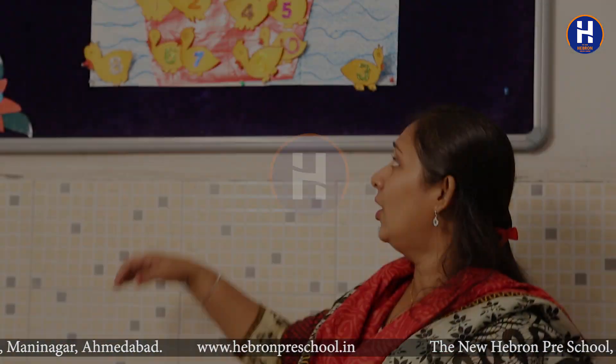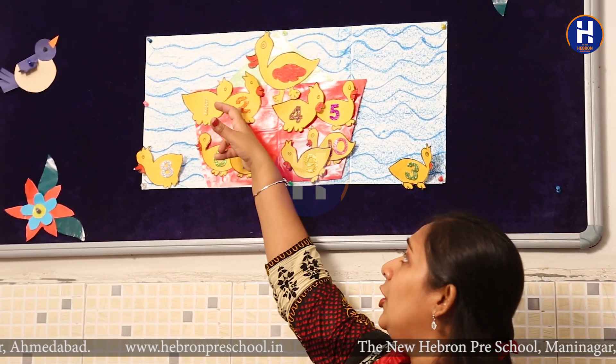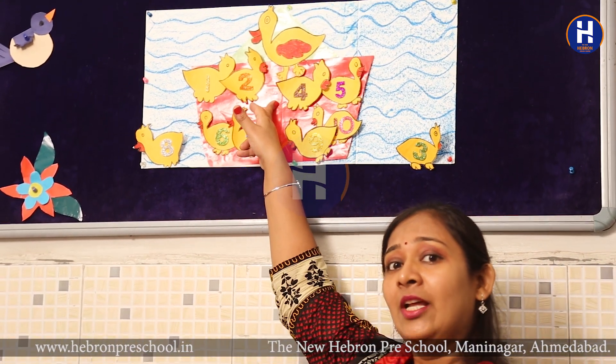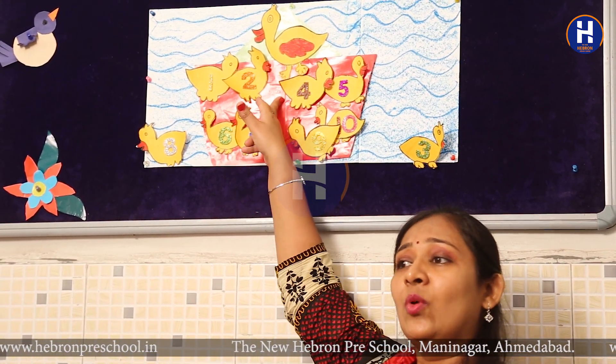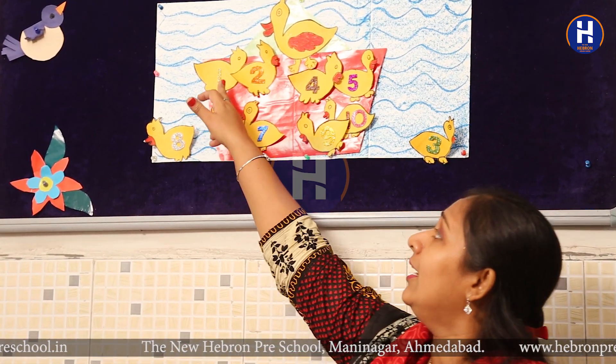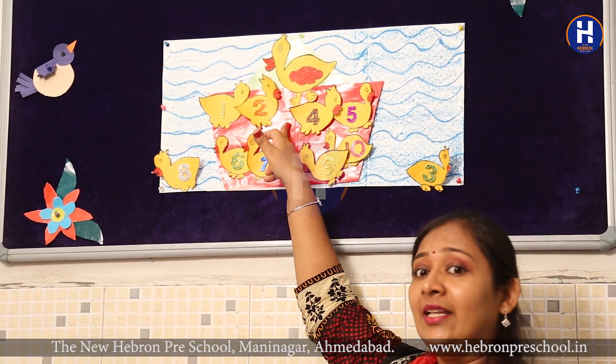Mama duck started looking here and there — woh yahan wahan dhundhne laghi. But she got an idea: let me count the numbers first and see which duckling is not in the boat. So she started counting the ducks: one, two — and she found that number three was missing. Mama duck ne counting start kiya: one, two, aur number three ka duck nahi tha.